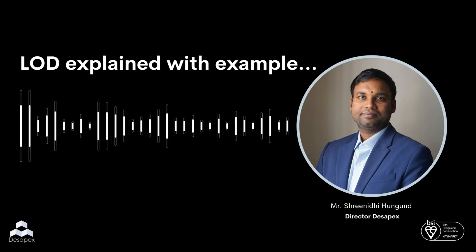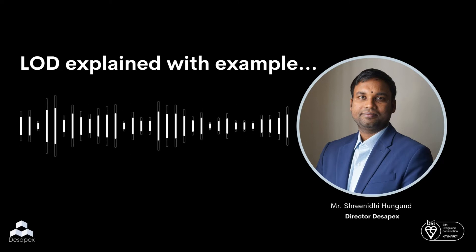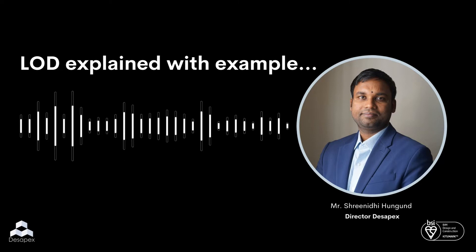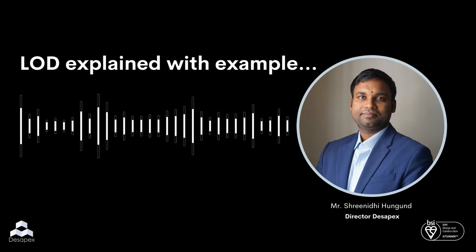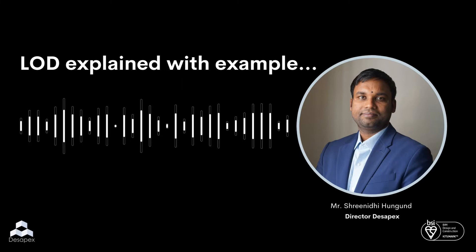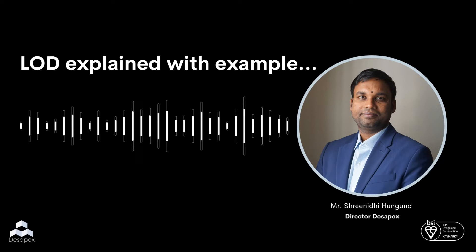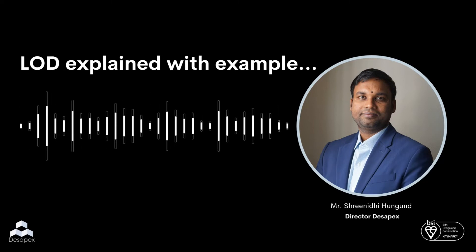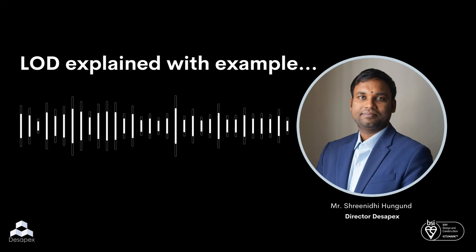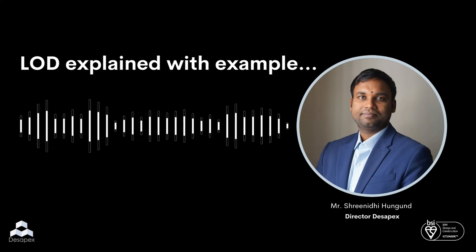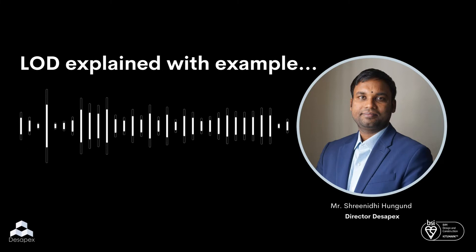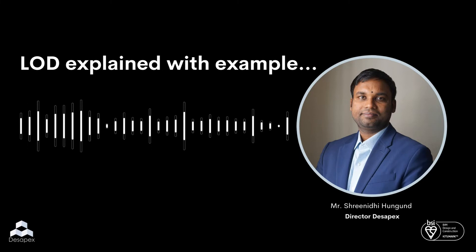Another important part of having a 3D information model is having the non-geometric data embedded into these 3D models, which is maybe the manufacturer details of this particular chair, or the chair's carbon footprint, what is the sustainability score, what is the weight of this chair. All this kind of information can be categorized into non-geometric data. This geometric data and non-geometric data collectively will be called as LOD.